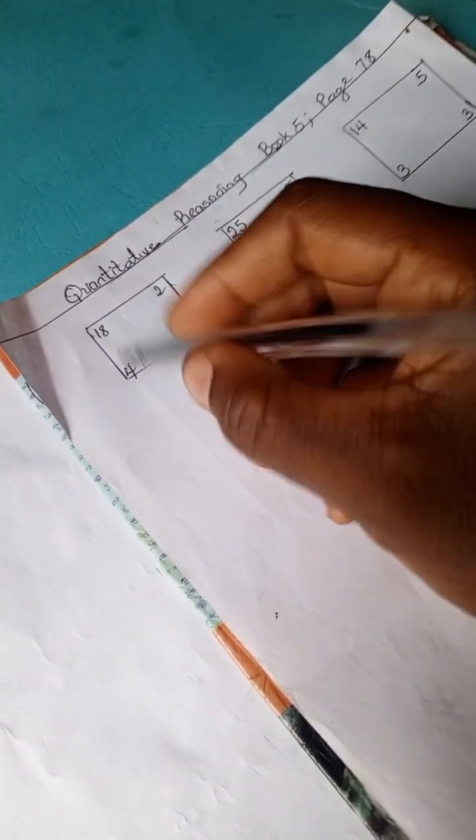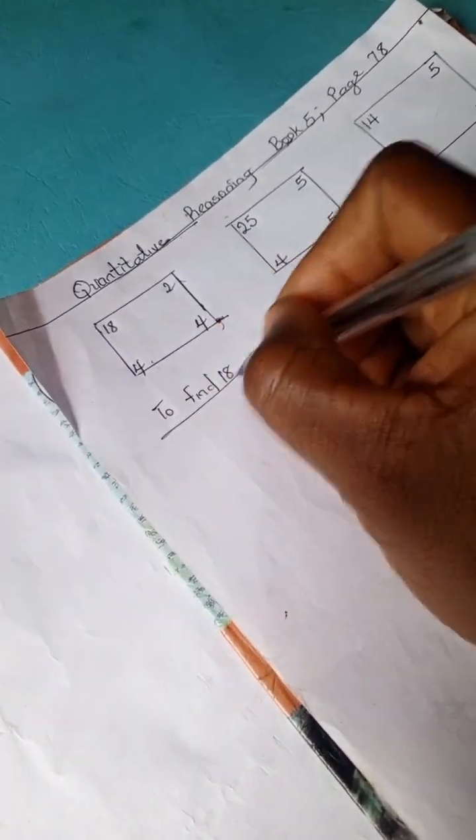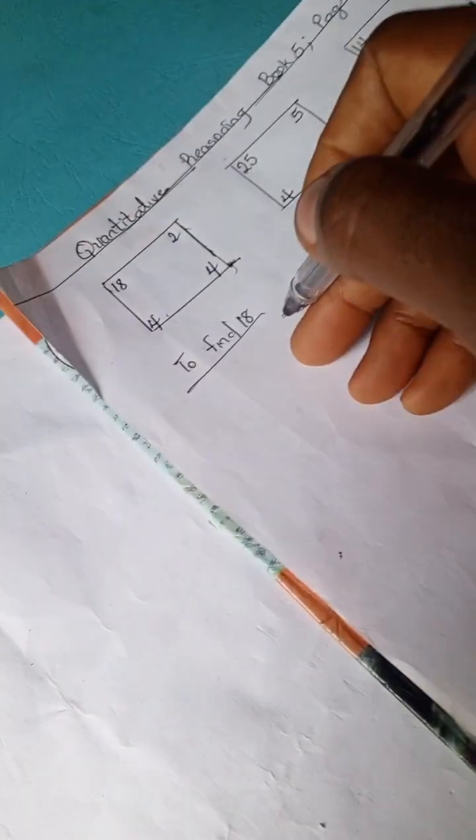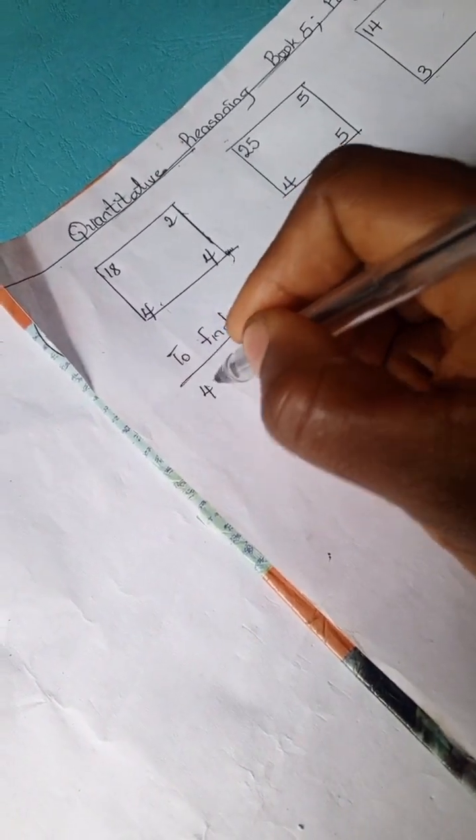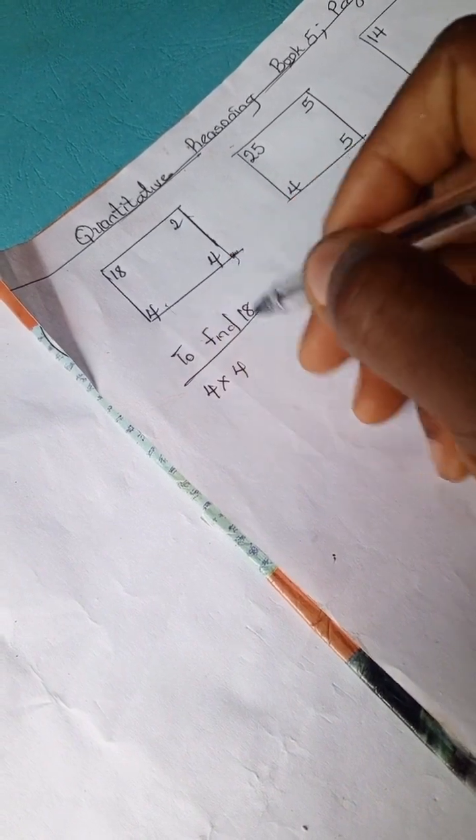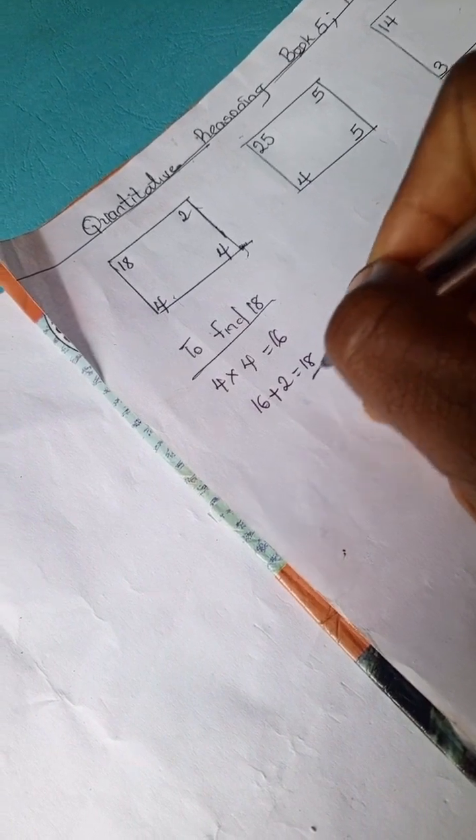So let's find 18. Let's see what was done to get 18. We can have 4 times 4. 4 times 4 is 16. 16 plus 2 is 18.